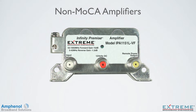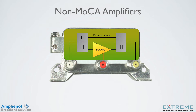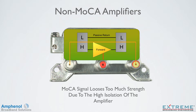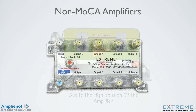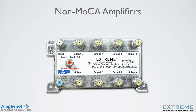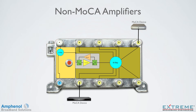There are limitations to MoCA networks if using non-MoCA amplifiers. With a one-output amplifier, if the MoCA signal tries to pass through it, the MoCA signal loses too much signal strength due to the high isolation of the amplifier and may be too low for proper MoCA operation. With traditional multiple output amplifiers, if MoCA devices are connected to several of the output ports, there may be too much port-to-port isolation of the internal splitter for MoCA to communicate properly.